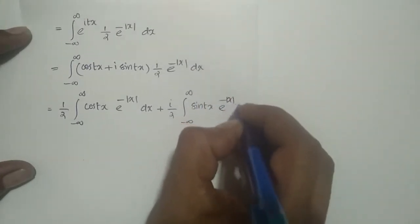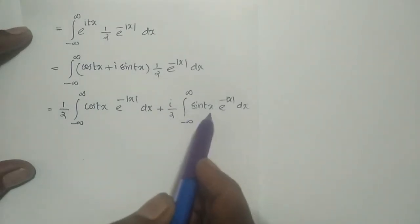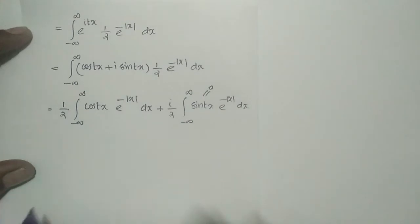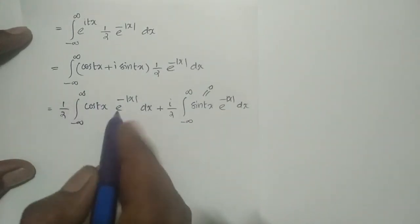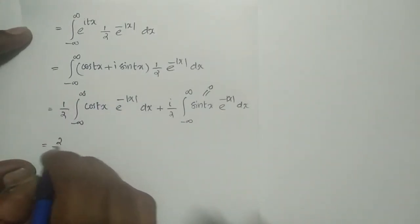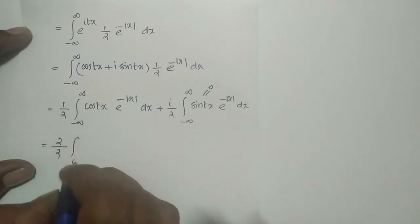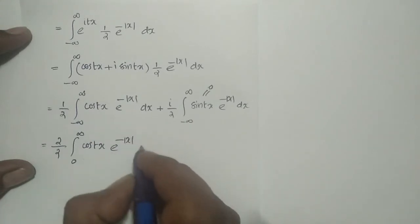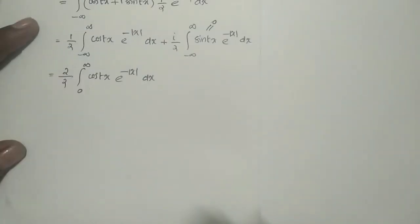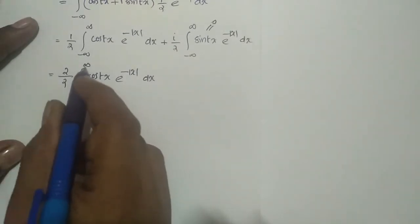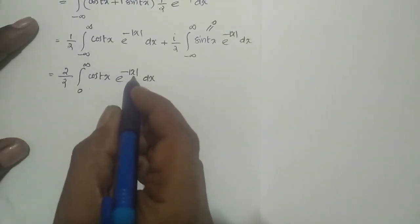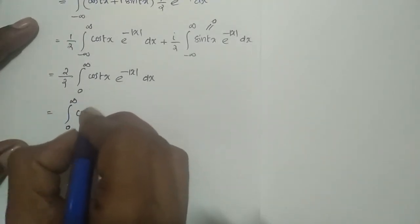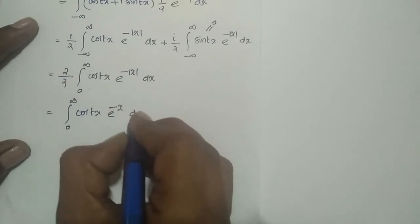The second integral contains sin(tx)·e^(−|x|), which is an odd function, so it equals zero. The first integral contains cos(tx)·e^(−|x|), which is an even function, so I can write it as 2 times the integral from 0 to infinity of cos(tx)·e^(−|x|) dx. Within the limit 0 to infinity, |x| = x, so it becomes the integral from 0 to infinity of cos(tx)·e^(−x) dx.